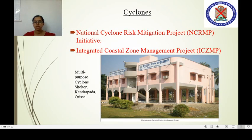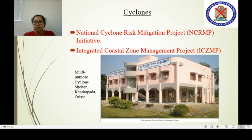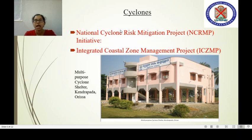Cyclone is another natural hazard. The National Cyclone Risk Mitigation Project, initiated by the Ministry of Home Affairs, aims to upgrade cyclone forecasting, tracking, and warning systems; build capacity in multi-hazard risk management; and construct major infrastructure including multi-purpose cyclone shelter homes and embankments.